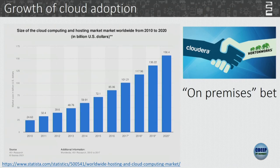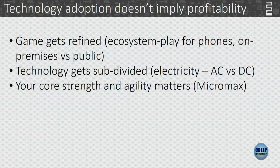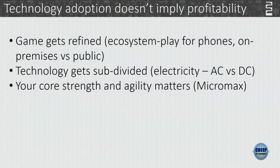Technology adoption can happen and you might still be betting on things that don't pick up. The game gets refined — ecosystem play for phones, on-premise versus public cloud. Technology also gets subdivided, like AC versus DC — Edison lost because he bet on DC. And your core strength and agility matters. Micromax wasn't into R&D and couldn't catch up when Chinese manufacturers entered India.